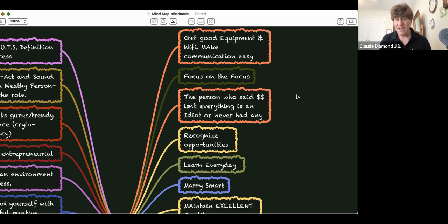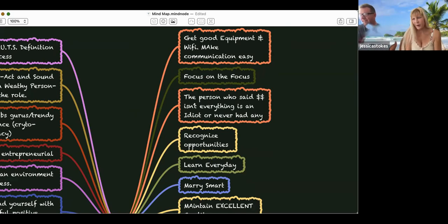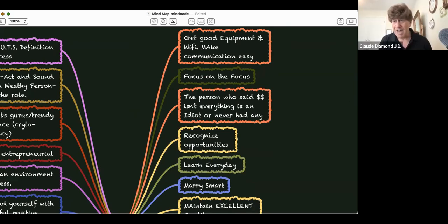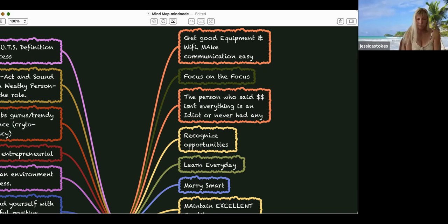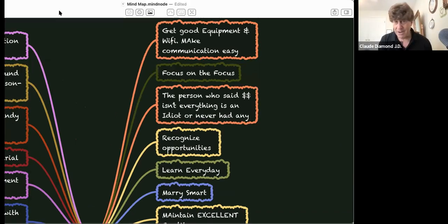The person who said money isn't everything is an idiot or never had any. Money makes your life better. Someone once told me money makes a good person better and a bad person worse. Money makes life convenient. It's wonderful. It resolves problems. It allows you to be a better person.